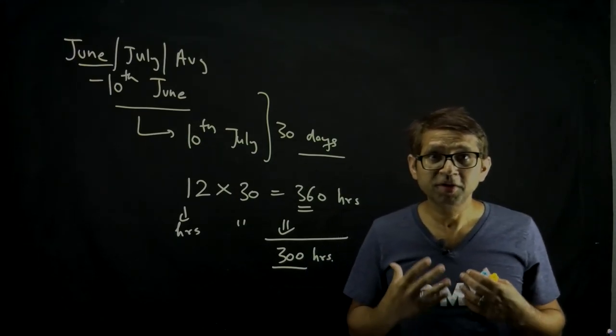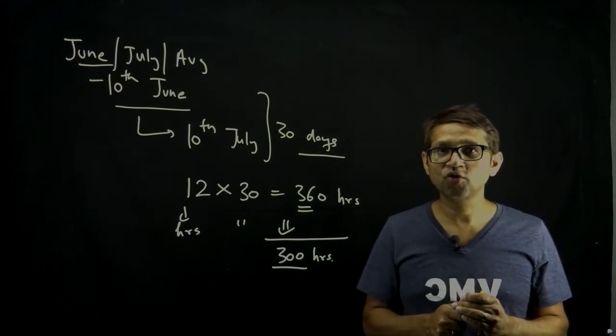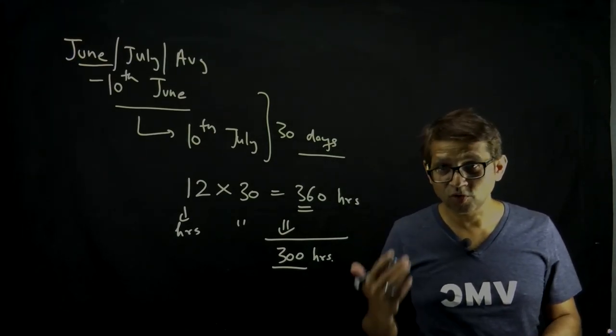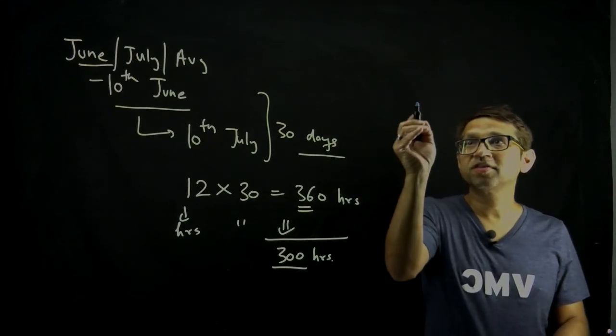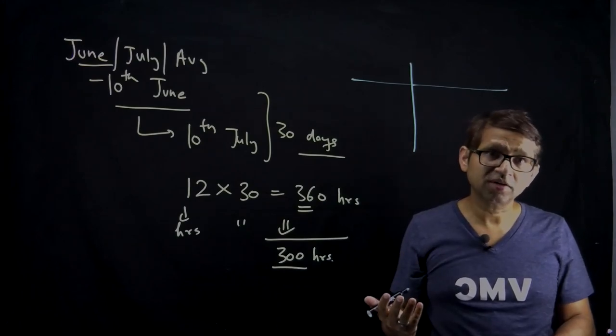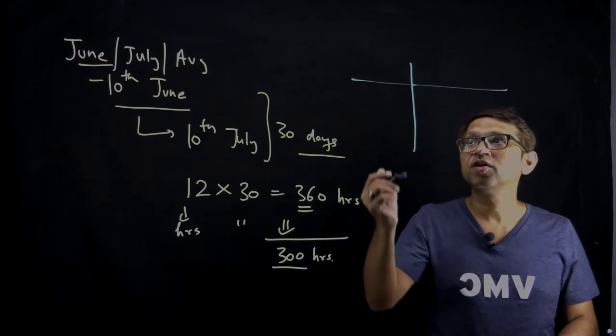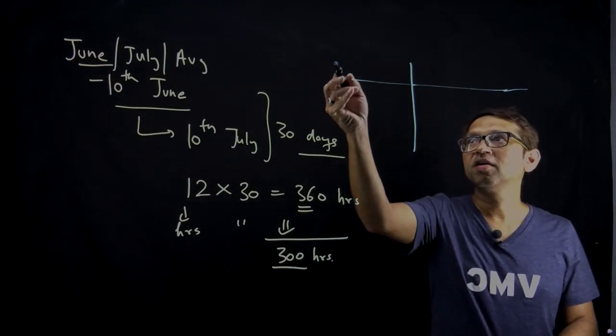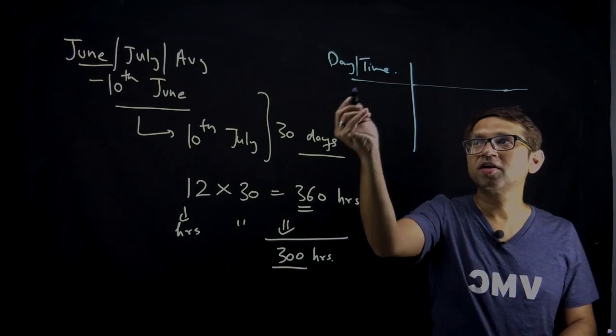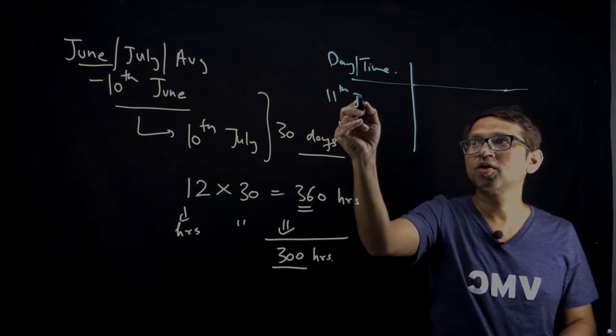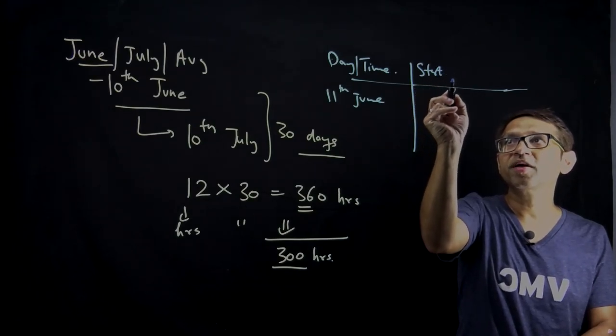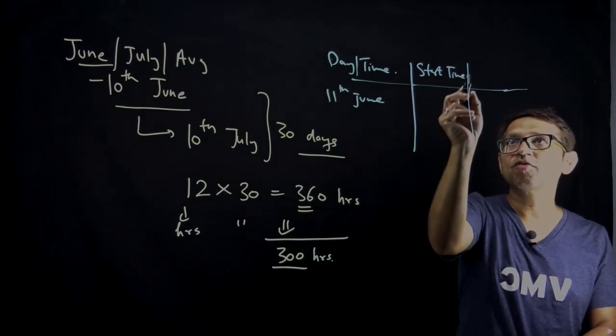You can have a diary. If you have a phone or computer, you can do it there. Log your time: start time and end time. Then calculate the number of hours, the duration.